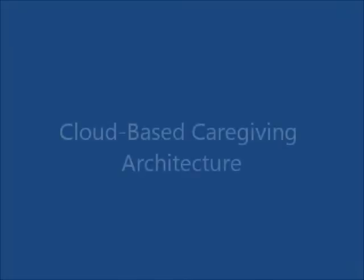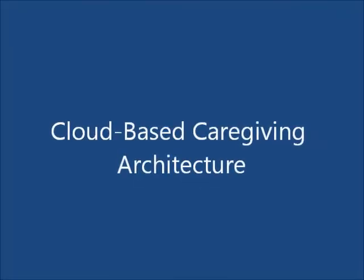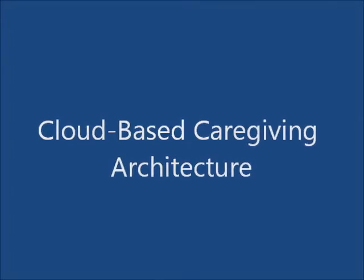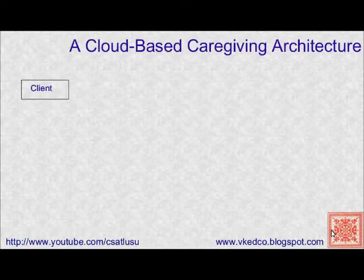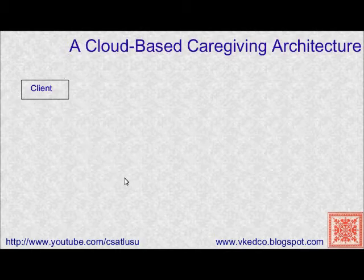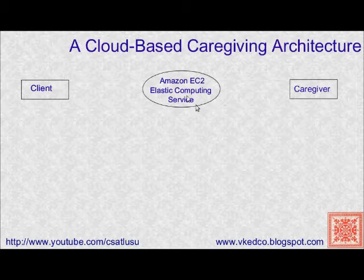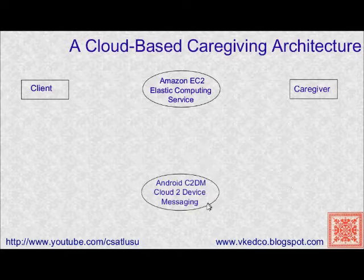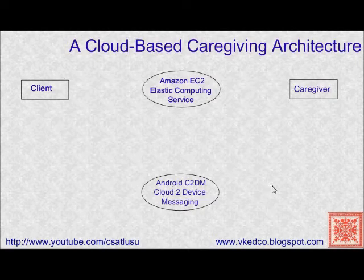Let's talk about cloud-based caregiving architecture. We have a client and we have a caregiver. Then, we need some cloud computing service, such as Amazon EC2 Elastic Computing Service, but it can be some other option. Then, we have to have a messaging service like C2DM.